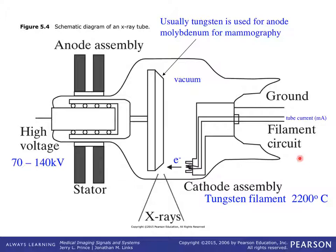The other thing we can change is the current — essentially the number of electrons flying across the gap. If you double the mA, you get twice as many x-rays out. To make a higher signal-to-noise x-ray picture, you crank up the mA and put more x-rays through the patient, getting a brighter x-ray beam.